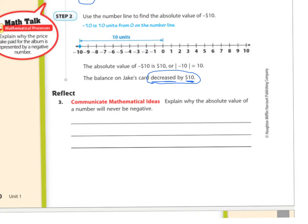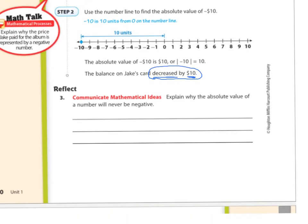Explain why the absolute value of a number will never be negative. It is because distances are always positive, and that's what absolute value is — absolute value is a distance. Distances are always positive.